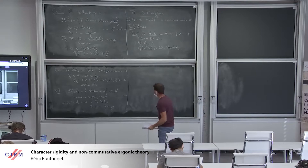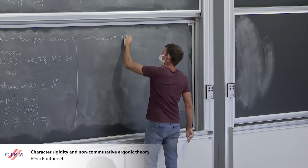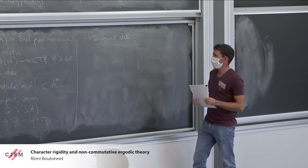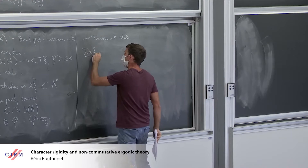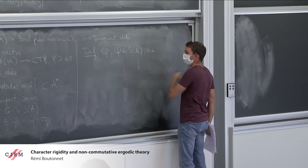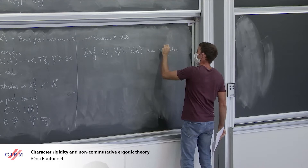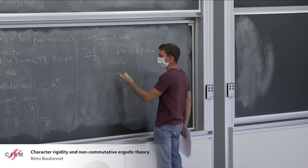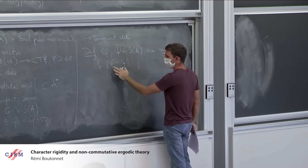You can define the notion of an invariant state. We will also see the notion of quasi-invariant state tomorrow. At the other end of the spectrum, you can define the notion of singular states — here there is no action, just two states. I call them singular, corresponding to singular measures. If the norm of the difference is exactly two, you call them singular.